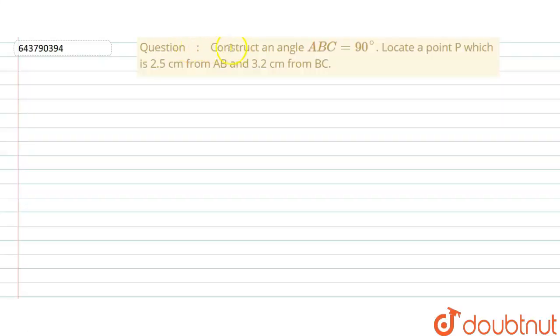Hello student, the problem is construct an angle ABC equals 90 degrees. Locate a point P which is 2.5 centimeter from AB and 3.2 centimeter from BC.